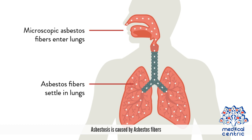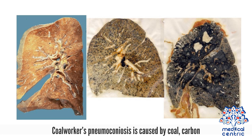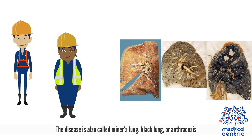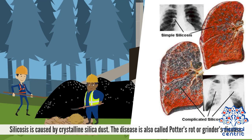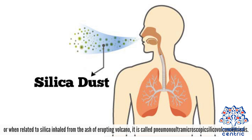Asbestosis is caused by asbestos fibers. Aluminosis is caused by aluminum. Coal workers' pneumoconiosis is caused by coal carbon — the disease is also called miner's lung, black lung, or anthracosis. Silicosis is caused by crystalline silica dust. The disease is also called potter's rot or grinder's disease, or when related to silica inhaled from the ash of an erupting volcano, it is called pneumo-ultra-microscopic-silico-volcano-coniosis.